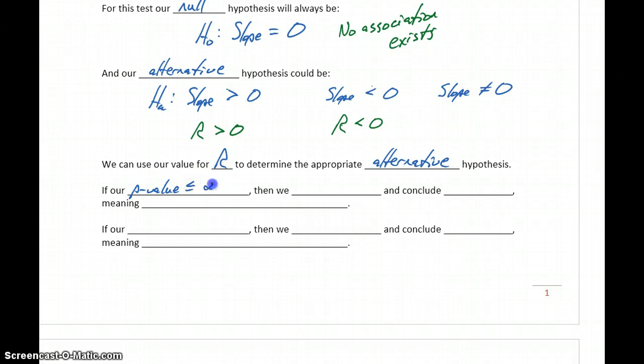If our p-value is less than or equal to our significance level alpha, we'll reject the null hypothesis and conclude that the slope is greater than, less than, or not equal to zero—whatever our alternative statement says—meaning a linear association exists. If we reject the null hypothesis, we can conclude that a linear association does exist between the two populations, and we've verified that first condition.